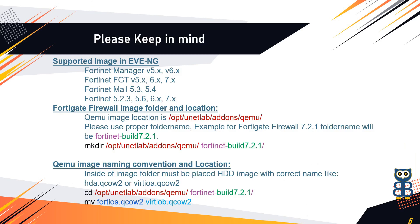The EVE-NG Simulator usually stores all KVM-supported images in the QEMU folder; however, the image cannot be stored directly in the QEMU folder. The EVE-NG Simulator provides the flexibility to create a dedicated folder for each vendor's images, and the folder name must meet the guidelines according to EVE-NG software. So the first thing is clear: you need to create a folder in the QEMU folder for the FortiGate Firewall Image.